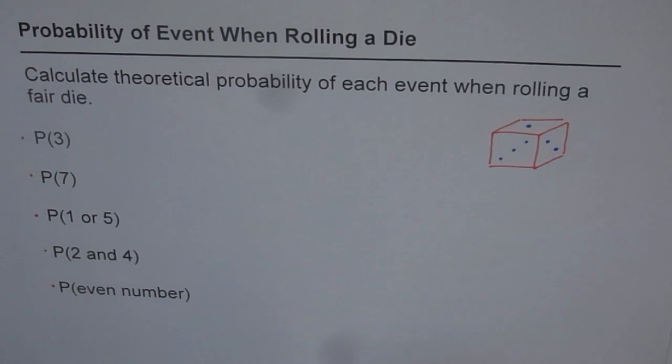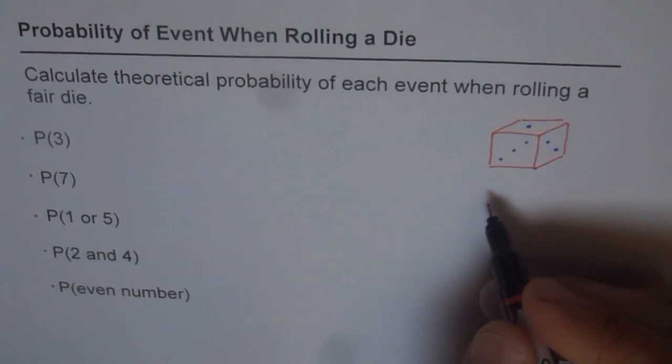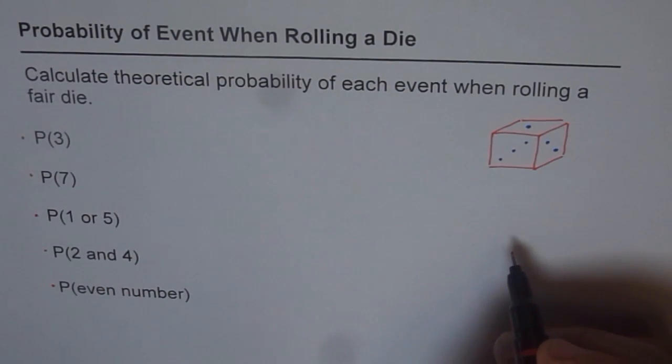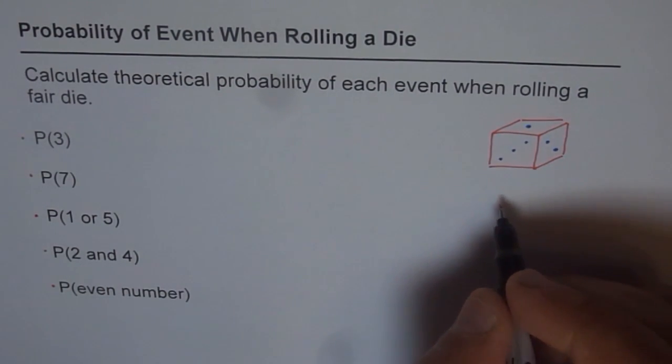Now we have to see what are all the possible outcomes for this dice. So the possible outcomes for the dice is, when you roll, we have to get a fair die. Fair die means equally likely events.